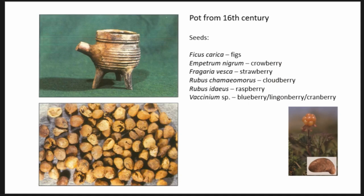A pot from Bergen from the 16th century found in waste deposits in the harbor area summarizes this well. The dominant species in it was figs — a lot of fig seeds — but also strawberry, cloudberry, and rosemary were present, all local species. We also analyzed the pollen, which was dominated by cereals, and there was also a lot of Calluna vulgaris, which is a common species in honey. So we see that seeds and pollen give very different patterns, or rather they complement each other. In medieval towns it's often only seeds that are analyzed, but it's very important to analyze both pollen and seeds to get better representation of what is present.